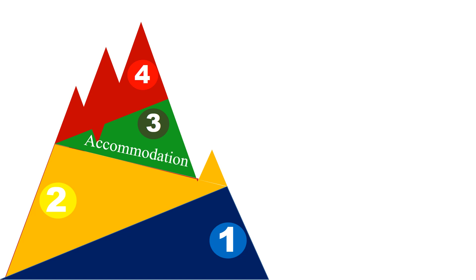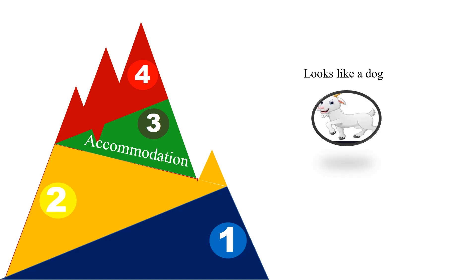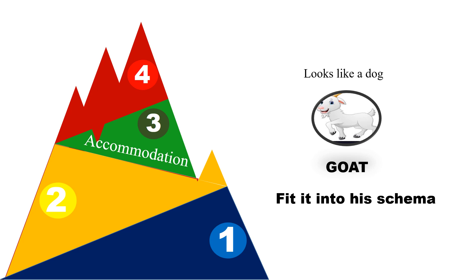Accommodation is the process of creating a new schema. If the same child now sees another animal that looks a little bit like a dog but somehow different, he might try to fit it into a schema of a dog and say, 'Look, mommy, what a funny looking dog. Its bark is funny too.' Then the mommy explains, 'That's not a funny looking dog. That's a goat.' With mommy's further descriptions, the child will now create a new schema — that of a goat. He now adds a new file in his filing cabinet.